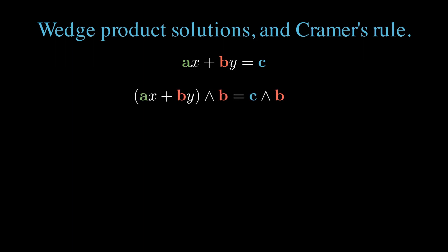For example, if we wedge from the right with b, we find a wedge b x plus b wedge by equals c wedge b. But b wedge b is zero by definition of the wedge product. We're left with a wedge b all times x equals c wedge b. In geometric algebra, the quotient of two wedge products is well-defined, so we can just write x equals 1 over a wedge b all times c wedge b, solving for x.